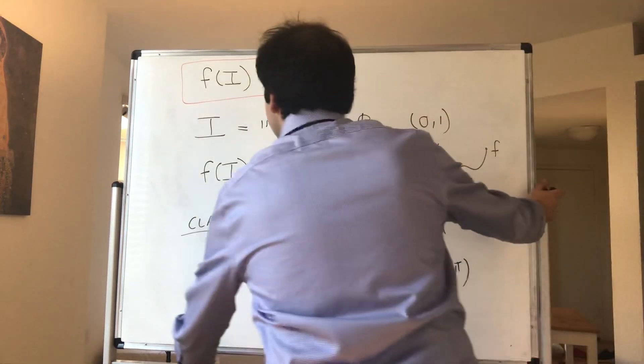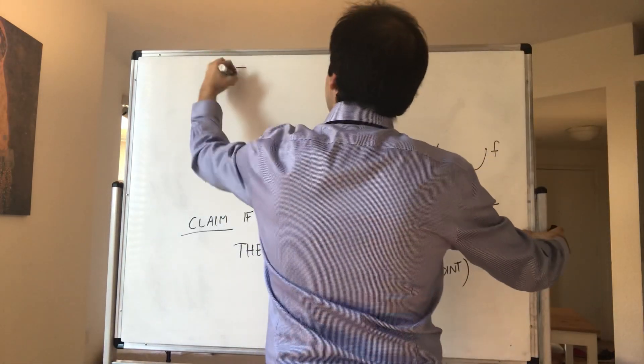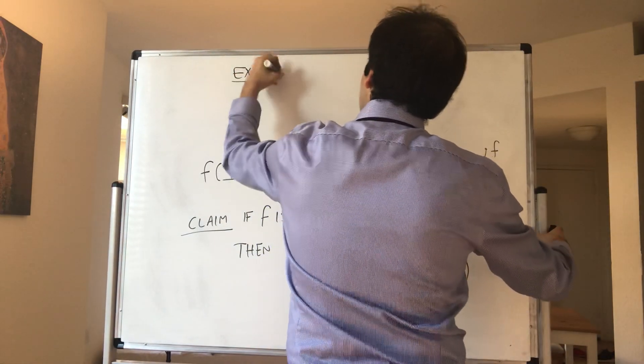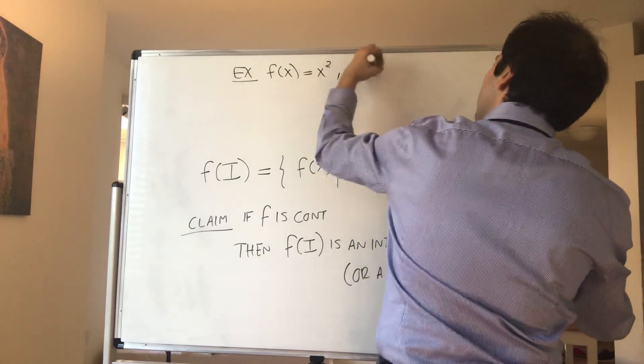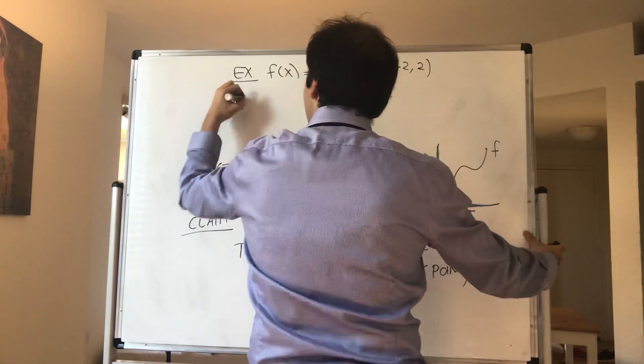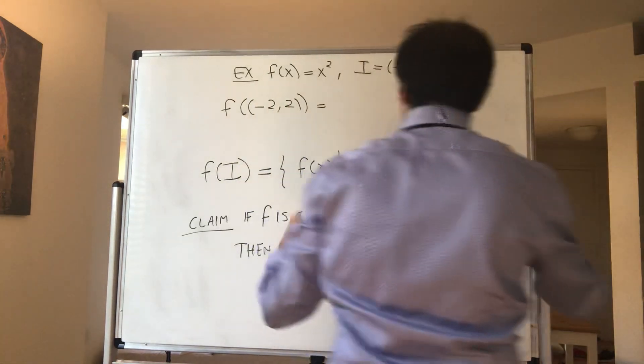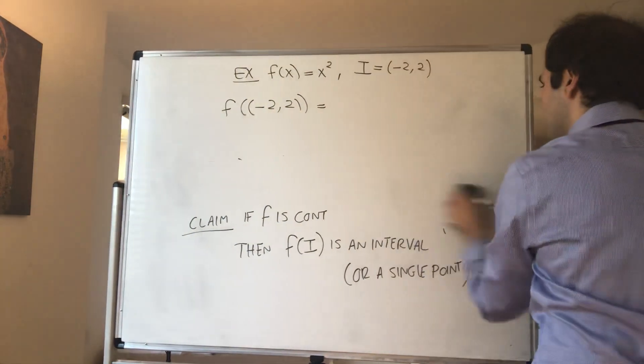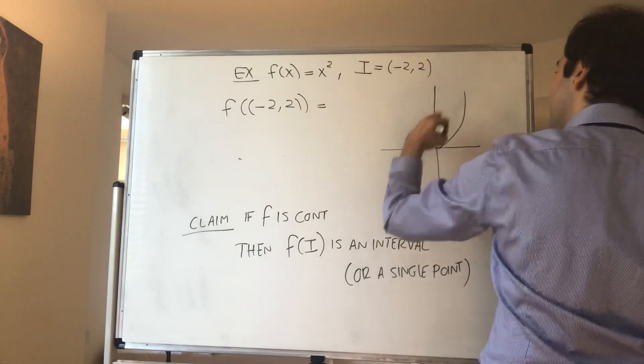For instance, if you take the function f(x) = x², which is continuous, and I to be the interval (-2, 2), then f of I, so f of (-2, 2), if you look at the picture, like here, this is our squaring function x².